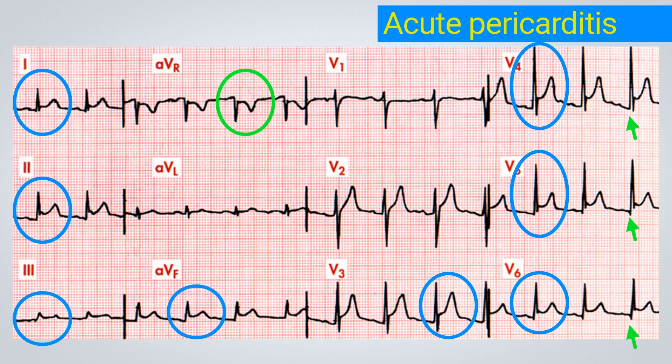Associated with this is a depression of the PR segment, most visible from V4 to V6, combined with an elevation of the PR interval in aVR. This ECG is strongly suggestive of acute pericarditis.